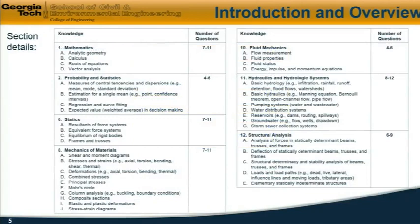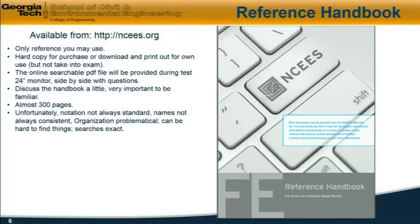These are the details of each of those seven sections as given in the reference handbook. As we progress, you'll see that I don't follow this outline exactly and will probably use somewhat different outlines for these sections. The reference handbook you can obtain from ncees.org, and this is the only reference that you may use in the exam. You can purchase a hard copy, or you can download and print the PDF manual for your own use. However, you cannot take it into the exam. The only thing available during the exam is the online file, which is a searchable PDF file that will be provided. The actual exam will be given on a 24-inch monitor, and the handbook will be side by side with the questions, so it's simultaneously available.